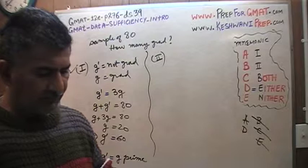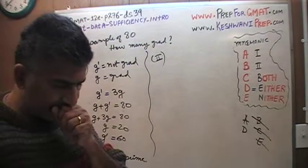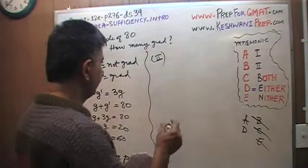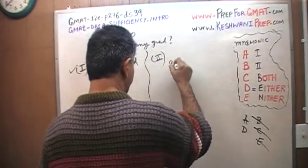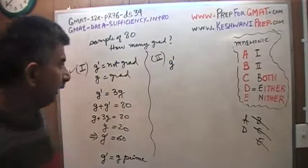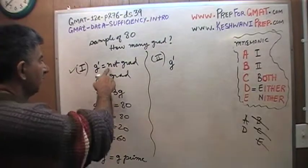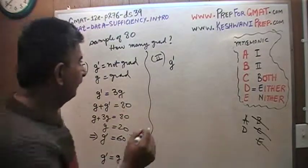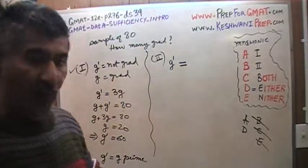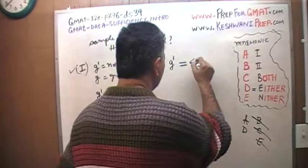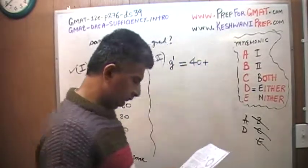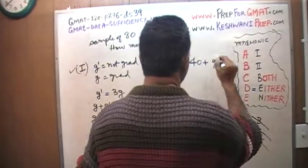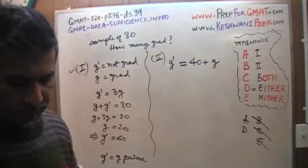Let's look at the second statement. It tells us that in the sample, the number of adults who are not college graduates is 40 more than the number of people who are college graduates. So the equation we get from the second statement is: G' = G + 40.